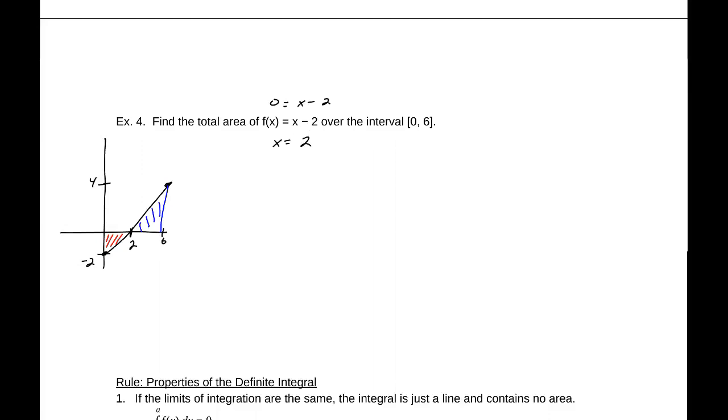So what this is going to come down to, our total area is the integral from 0 to 2 of (x - 2) dx plus the integral from 2 to 6 of (x - 2) dx. Now, to find the total area, what I'm going to do is make both of these positive. So I'm going to take the absolute value of whatever I get out of those area functions.